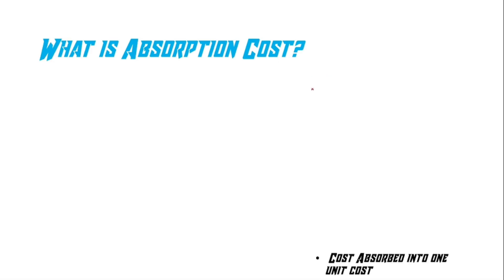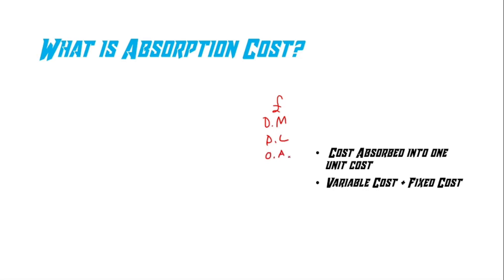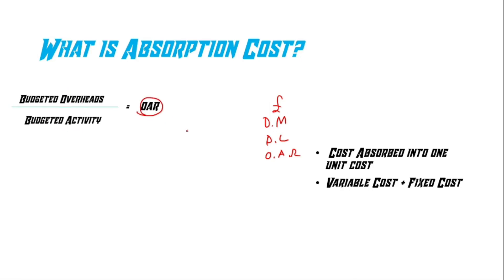So what is absorption costing? It is basically a cost that is absorbed into one unit cost, and that unit cost is made out of fixed costs and variable costs. For example, the information in the question could give you direct materials, direct labour, or overhead absorption rate. To calculate the overhead absorption rate we use this formula: budgeted overheads divided by budgeted activity, which gives you the overhead absorption rate, which you can then combine with the other costs to calculate the absorption cost.